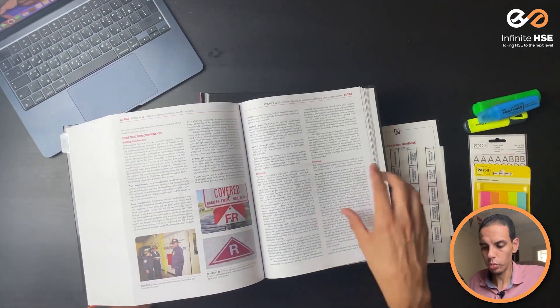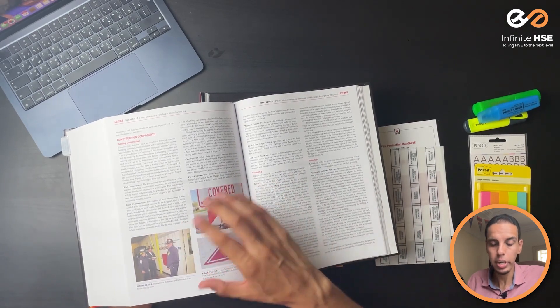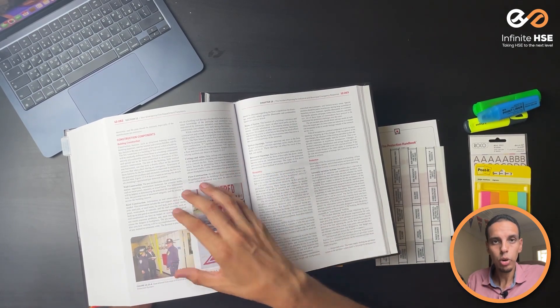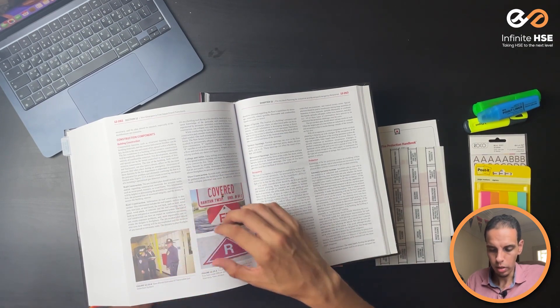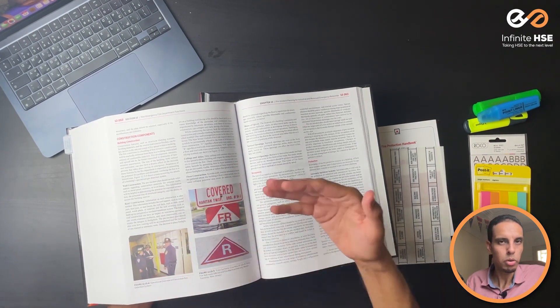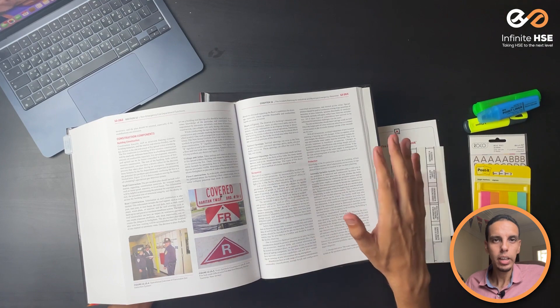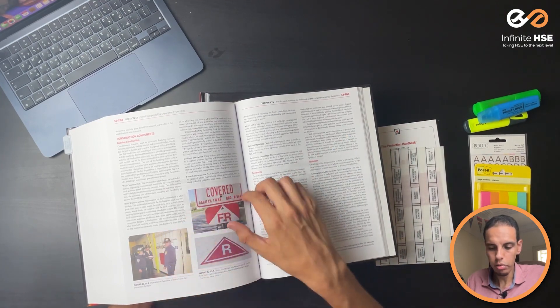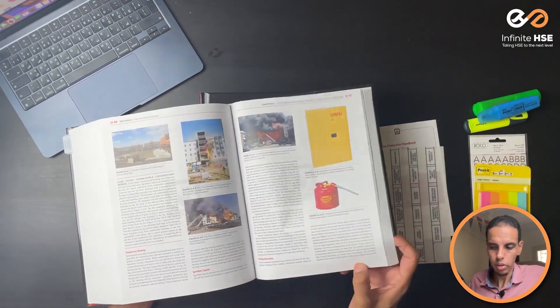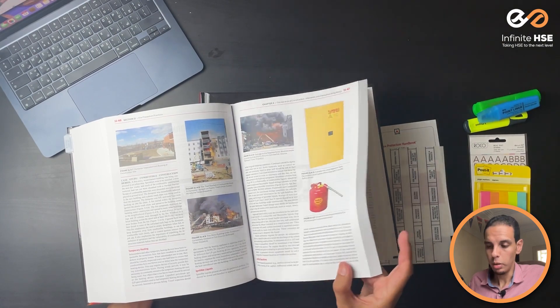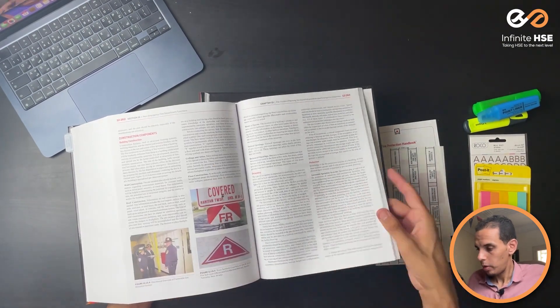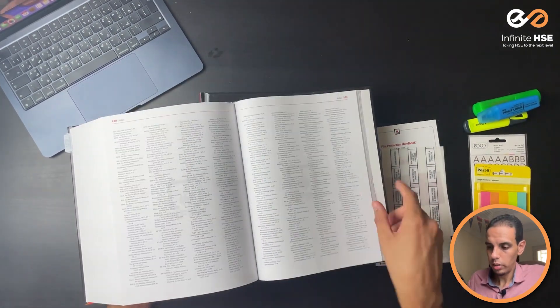By the way, one of the main differences between the new book and the old book is, as you see, colored photos. Before it was all black and white, but now you have colored photos. It's a very nice improvement by NFPA.